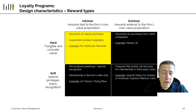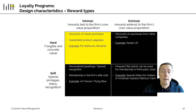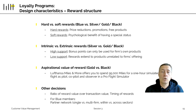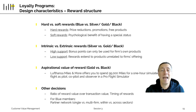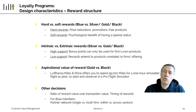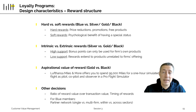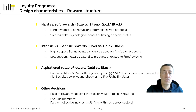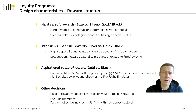Why do we need all these colors and different reward types? The reason is that they are all necessary to manage customers most profitably, depending on how valuable those customers are. Hard rewards are particularly attractive for customers at the bottom of the pyramid — those who fly enough to earn free tickets but not so much that they no longer want them. But once you fly once, twice, or three times a week, getting another free ticket has very limited value. For those high-frequency customers, we need something else — and that's often soft rewards: the psychological benefit of recognition and status.